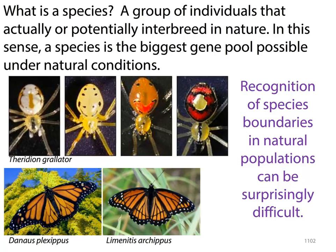Technically, as defined, a species is a group of individuals that actually or potentially interbreeds in nature. In this sense, a species is the biggest gene pool possible under natural conditions. Now, it can actually be really hard to recognize species boundaries in natural populations. A lot of times you'll have different species that are very different from one another but look a lot alike, and then others that look very different but it turns out they're the same species. It kind of depends on what your criteria are.